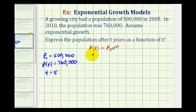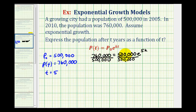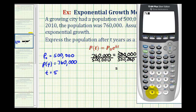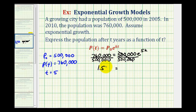We want to solve the equation 760,000 equals 500,000 times e raised to the power of k times t, but since t is five we'll have five k. To solve this exponential equation for k, we'll first isolate the exponential part by dividing both sides by 500,000. That simplifies to one on the right, and 760,000 divided by 500,000 equals 1.52. So we have 1.52 equals e to the power of five k.